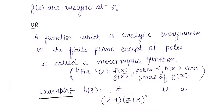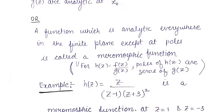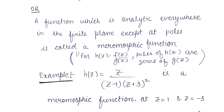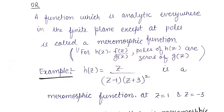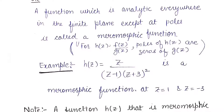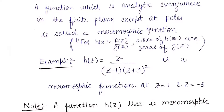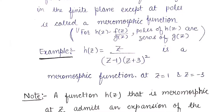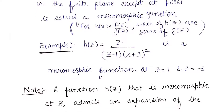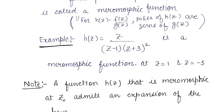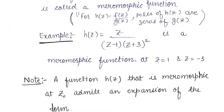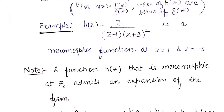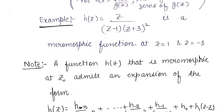An example of a meromorphic function is any function of the form f(z)/g(z). You can take that function to be z / [(z−1)(z+3)²]. This function has poles at z = 1 and z = −3, so it has finitely many poles in the finite plane and hence is an example of a meromorphic function.